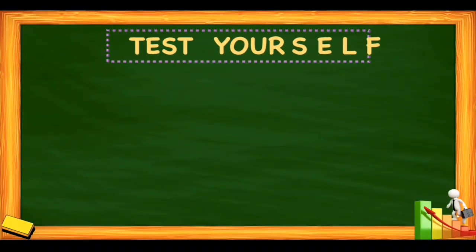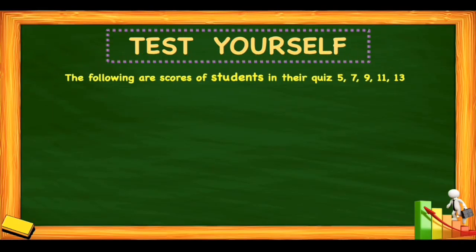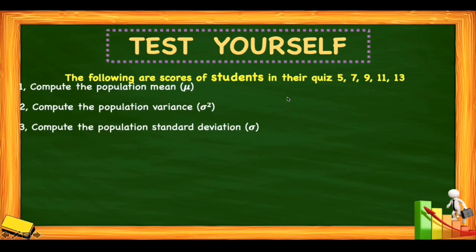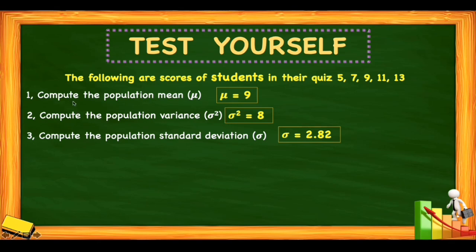Now let's test yourself. There are practice problems given — pause the video to solve them. Problem 1: The following are scores of students in their quiz: 5, 7, 9, 11, and 13. Compute the population mean, population variance, and population standard deviation. The answers are: population mean = 9, population variance = 8, and population standard deviation = 2.82.